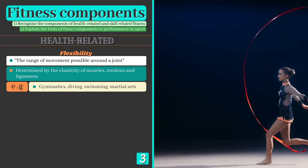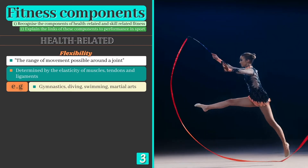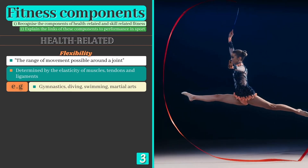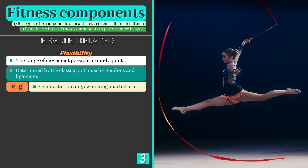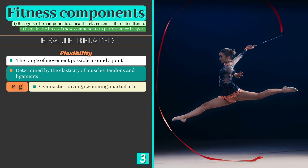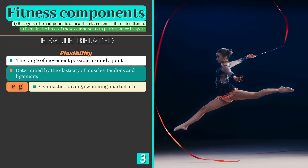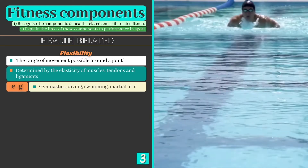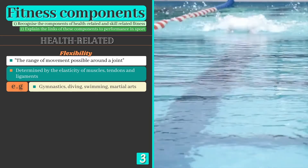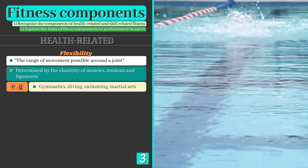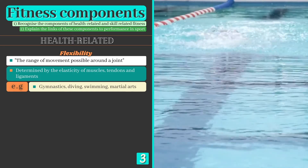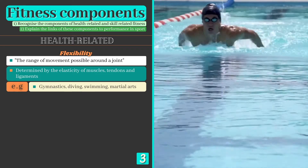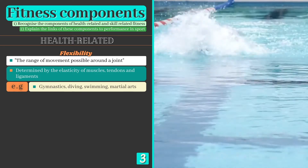Flexibility is our third component and can be defined as the range of movement possible around a joint. It relies on the elasticity of muscles, tendons and ligaments and is particularly important for swimmers performing the butterfly stroke, gymnastic actions such as the splits, and when throwing a high side kick in taekwondo.